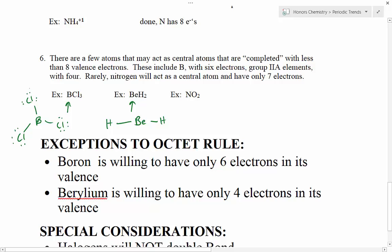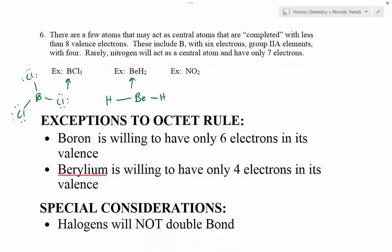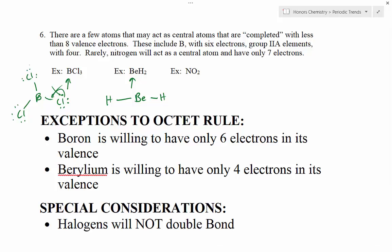Halogens will not double bond. The reason why halogens will not double bond is simply that they're so electronegative and they like electrons so much that they're unwilling to share more than one of their electron pairs in almost all circumstances. So don't ever pick from a halogen and expect the halogen to do a double bond, because that will not happen. This has been a podcast going over how to draw Lewis Dot diagrams, and I hope that this was helpful.